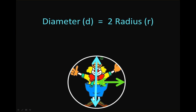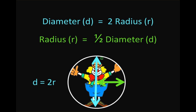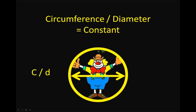Let's look at the relationship between the diameter and the radius. The diameter is two times the radius, which can be written as d equals 2 times r. And from the standpoint of the radius, the radius is equal to one half the diameter, which can be written as r equals one half of d. This is very important as we go forward.